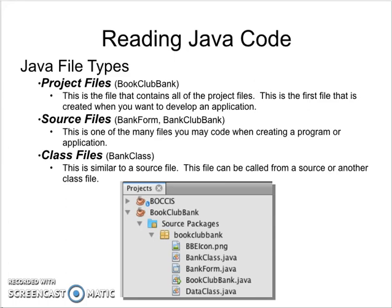Project files — this is the file that contains all of the project files. This is the first file that is created when you want to develop an application. Think of it this way: the project file is a container for all the contents within a project, which can be an image, a class, a source file, libraries. Everything is contained within this project file. When you copy a project file folder, you are copying the complete contents of the Java project.